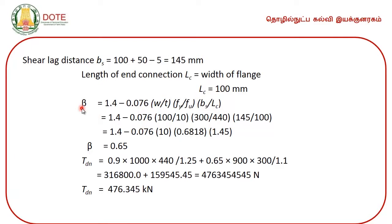Substituting the relevant values, the factor beta is found to be 0.65. However, there is a correction here: the minimum value of beta is 0.7. So we substitute 0.7 instead of 0.65. This is a minor correction and won't cause much change in the design tensile strength against rupture of critical section.